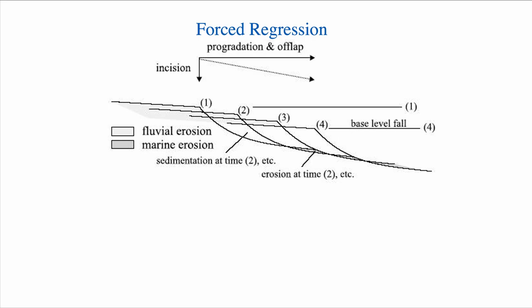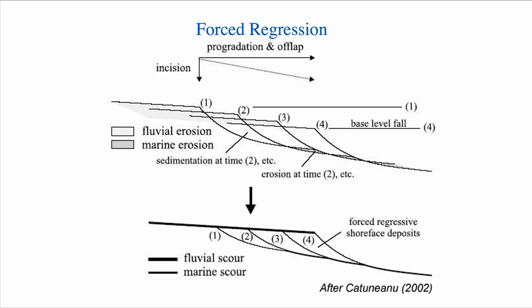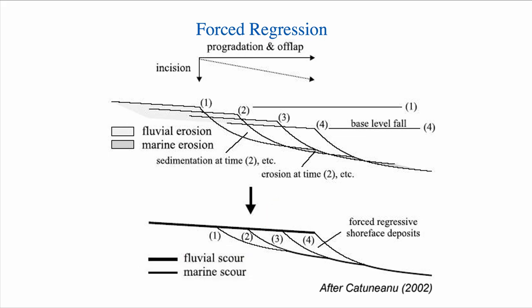One characteristic of the forced regression is that because base level is falling, we expose the sediment in the hinterland, and that leads to erosion. So a forced regression is characterized by an unconformity at the top — by erosion at the top — because the older sediments are exposed and eroded. That's really a key characteristic of a forced regression.